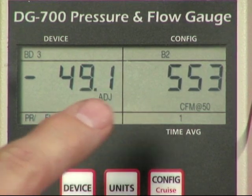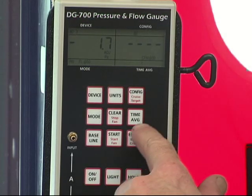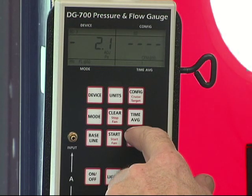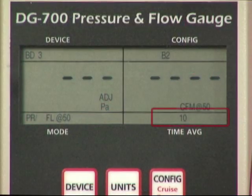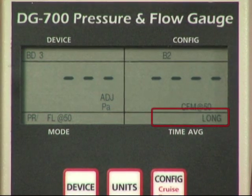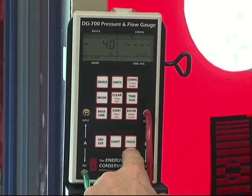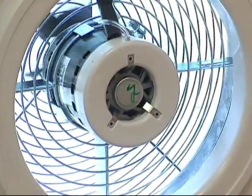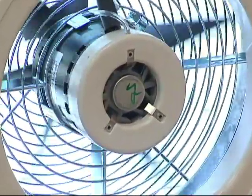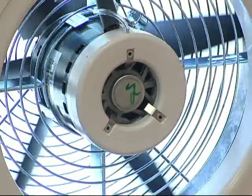If the leakage estimate is fluctuating more than desired, try changing the time averaging setting on the gauge by pressing the time average button and choosing the 5-second, 10-second, or long-term averaging period. Once you're satisfied with the reading, press the HOLD key on the gauge to temporarily freeze the display, record the CFM50 test reading, turn off the fan, then press the HOLD key again to unfreeze the gauge display.